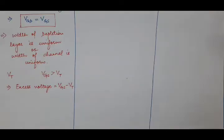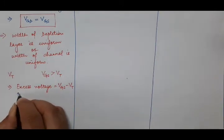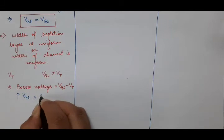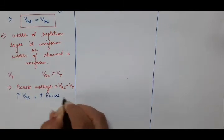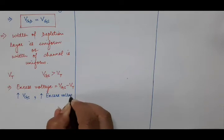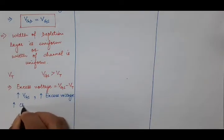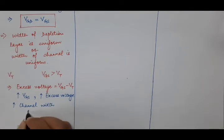Higher is the value of VGS, higher will be the excess voltage, higher will be the channel width, and higher will be the drain current.